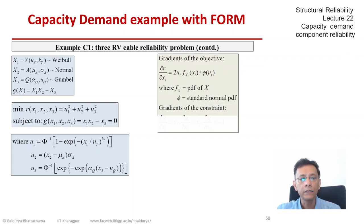And the gradient of the constraint in this particular case, it's very simple. The first one is X2, the second one is X1, and the third one is minus 1. You just differentiate G and that's what you get.